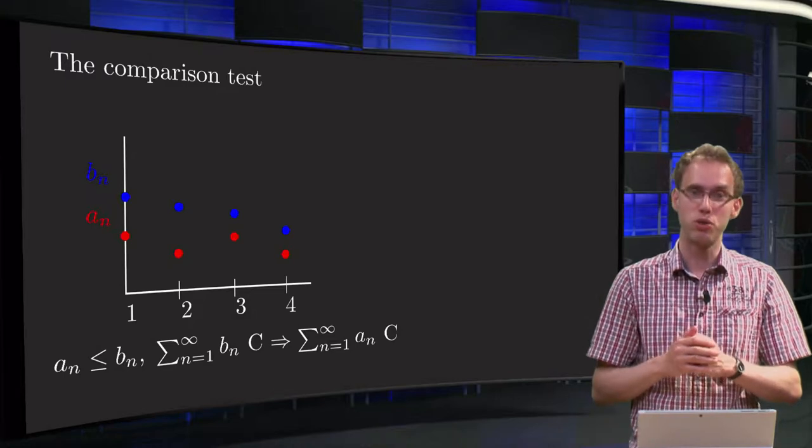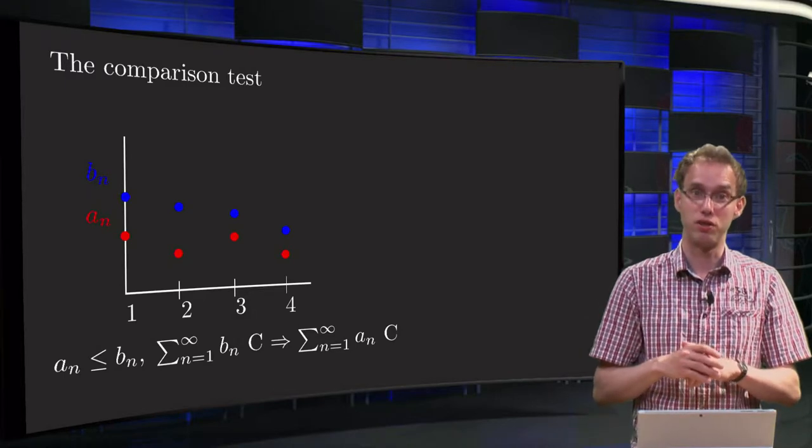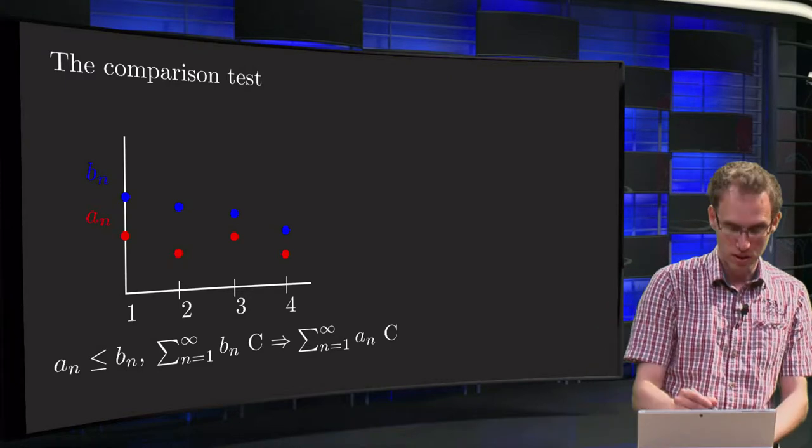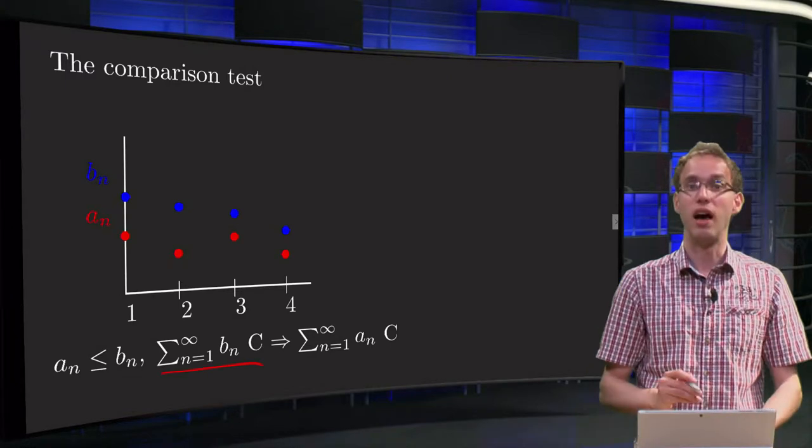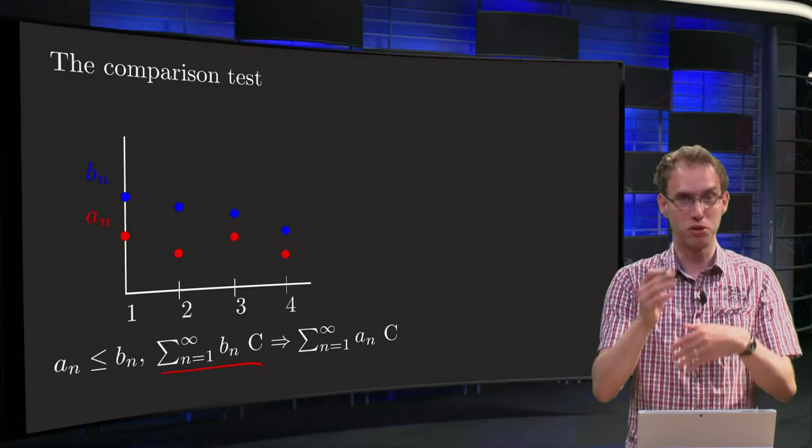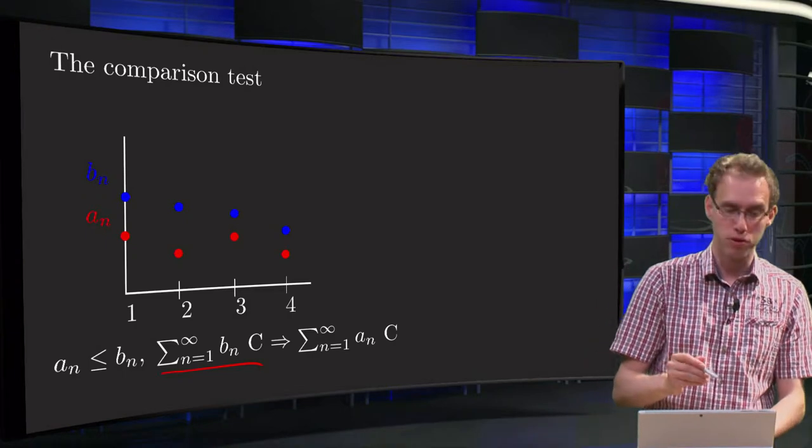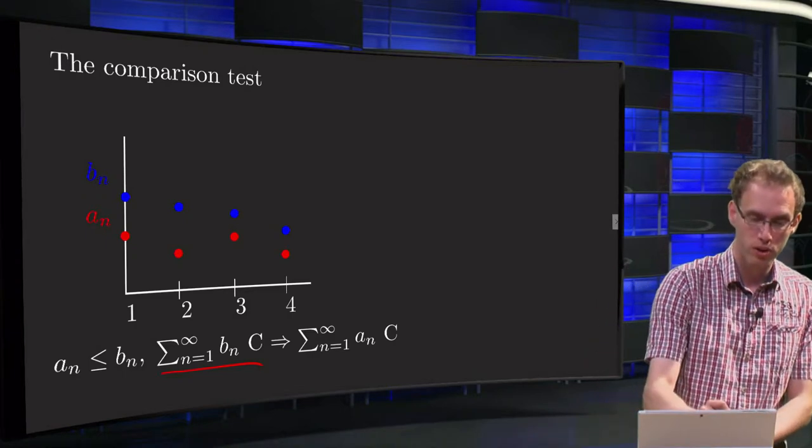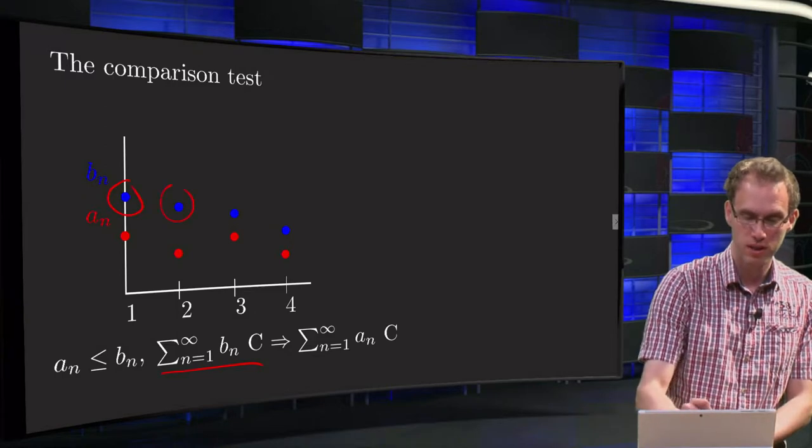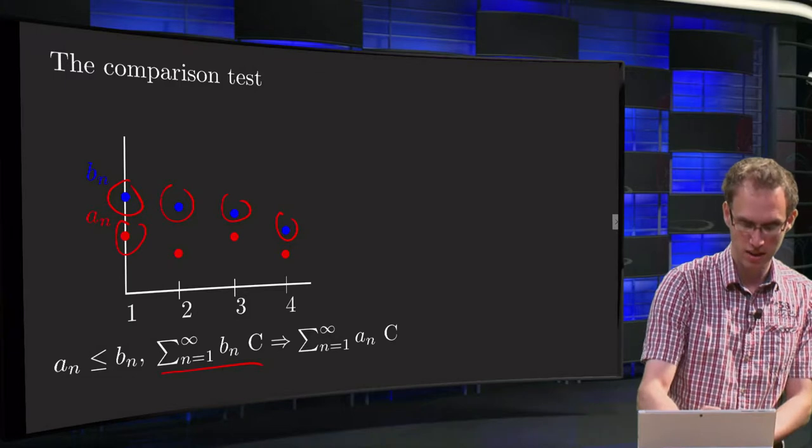So suppose we have two series, a series with terms An and a series with terms Bn. And suppose we know that the series with terms Bn converges - some known series, a p-series or geometric series or whatever, we know that it converges. And suppose furthermore that all terms with the Bs are bigger than the terms with the As and that they are all positive.